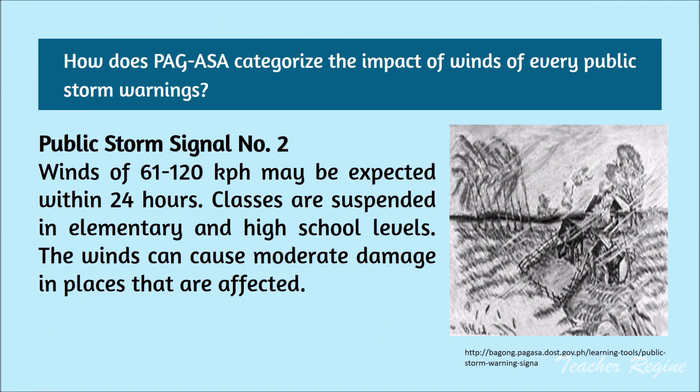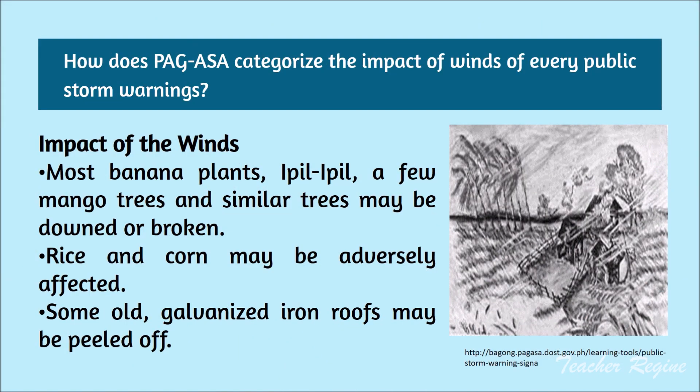Public Storm Signal Number 2: winds of 61 to 120 kilometers per hour may be expected within 24 hours. Classes are suspended in elementary and high school levels. The winds can cause moderate damage in places that are affected. Most banana plants, ipil-ipil, a few mango trees, and similar trees may be down or broken. Rice and corn may be adversely affected. Some old galvanized iron roofs may be peeled off.